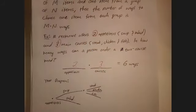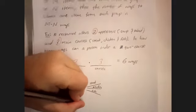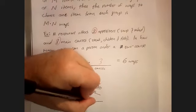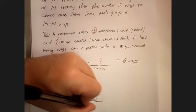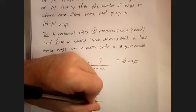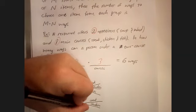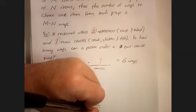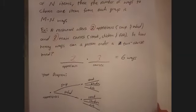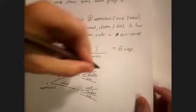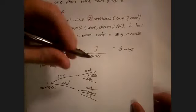And then same with my salad. Once I've chosen a salad, I can now choose a steak, chicken, or fish. And so at that point, you probably see our six possible ways. I'm going to go ahead and list out our options.